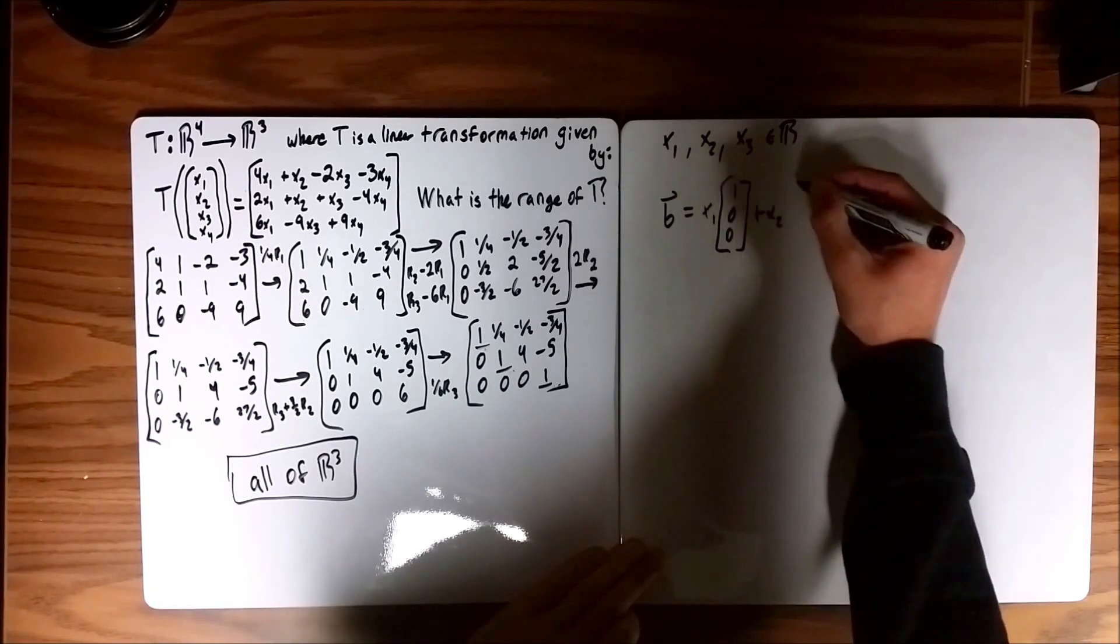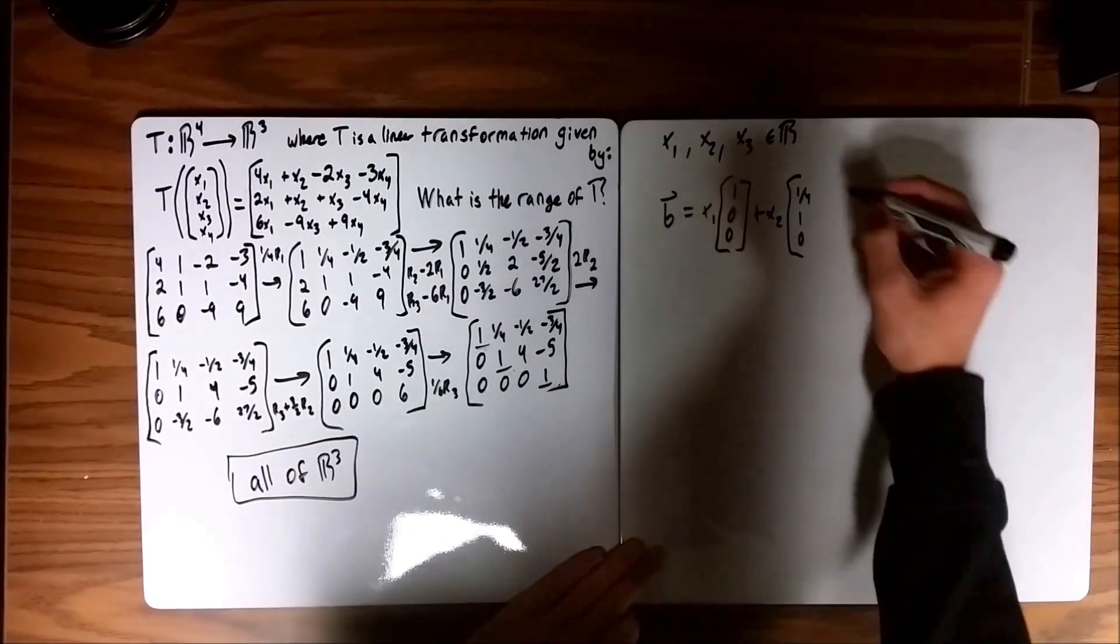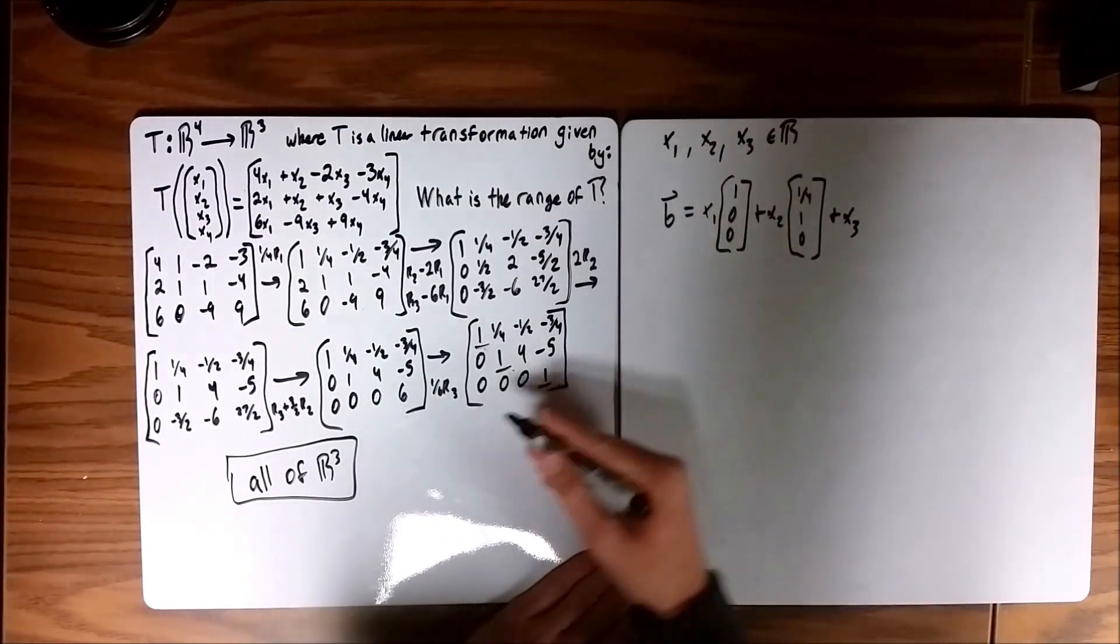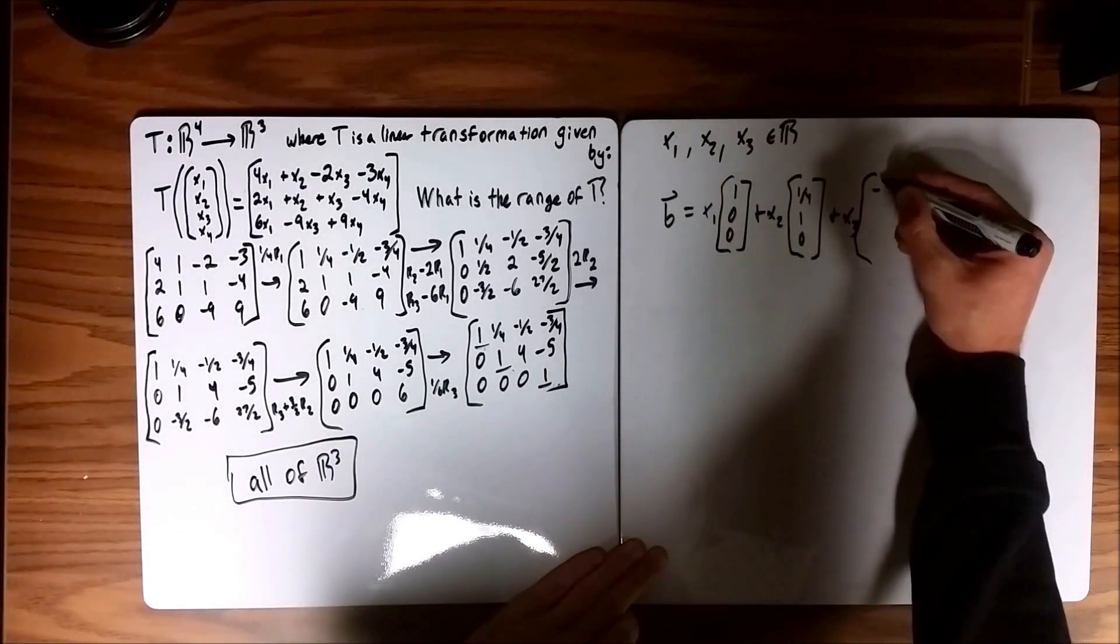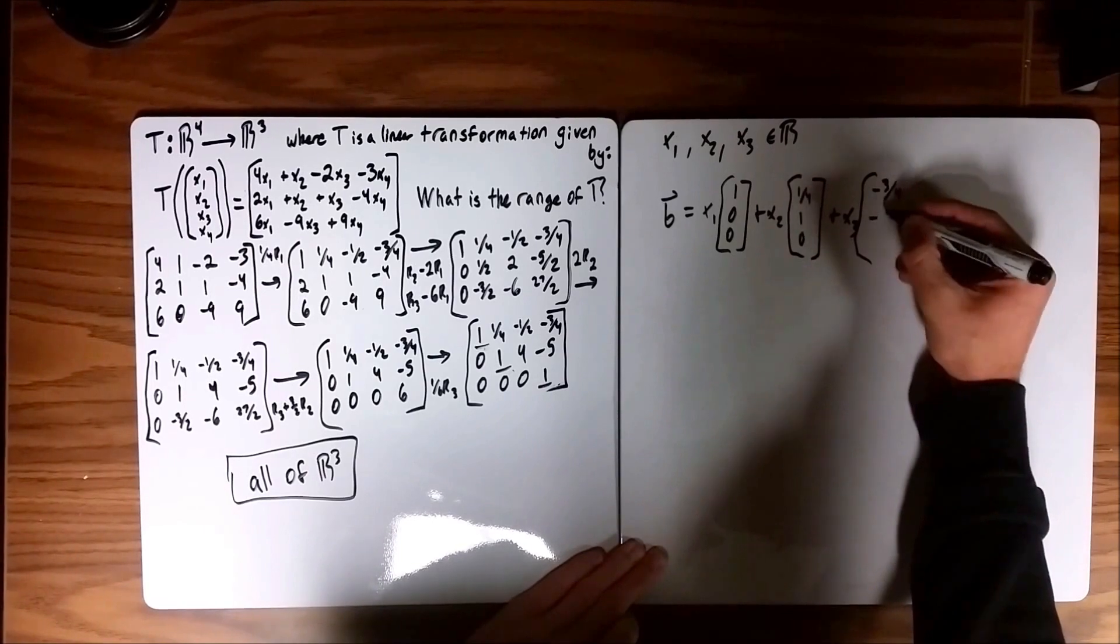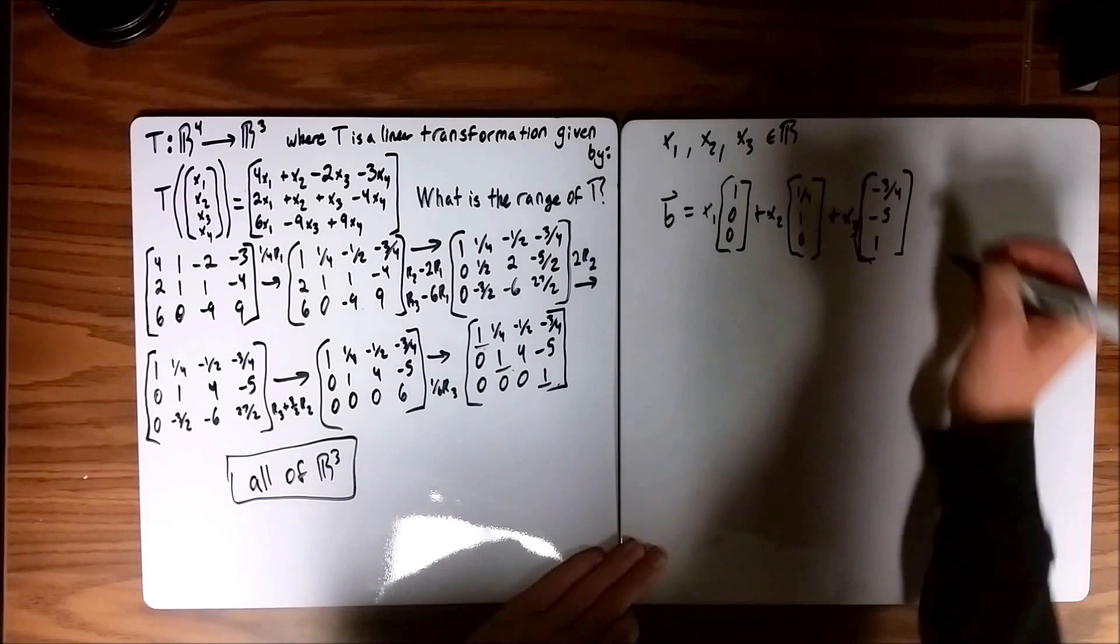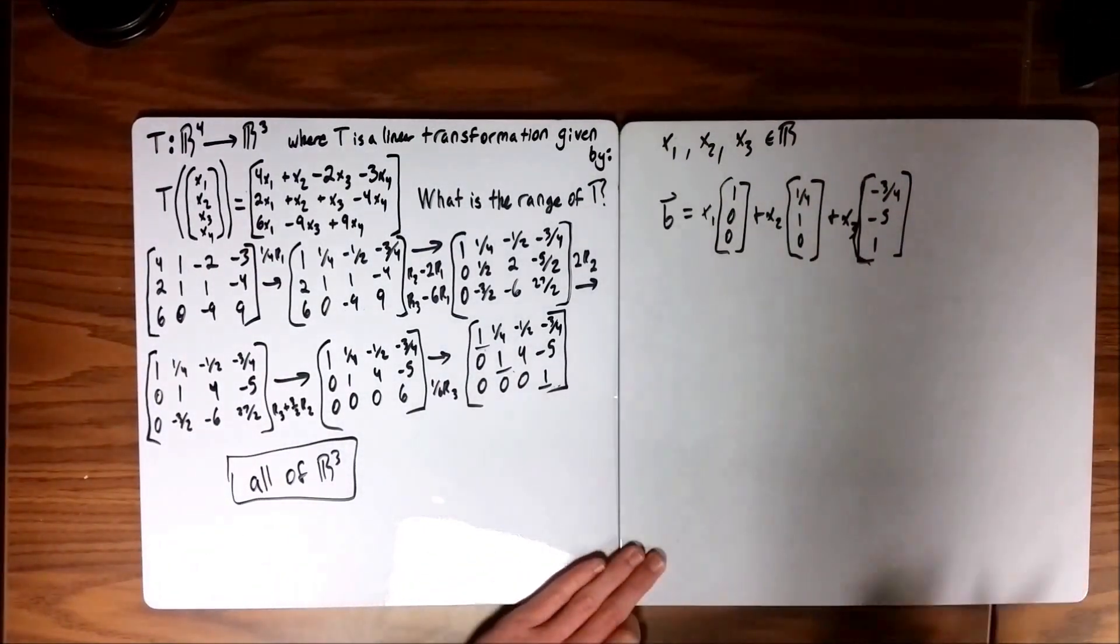Where you have some multiple of the vector 1, 0, 0, plus some multiple of the vector 1 fourth, 1, 0, where I am just pulling these pivotal columns and making them vectors because they are linearly independent because they are pivotal. And X3 times negative 3 over 4, negative 5, and 1. And that is the vector equation that represents the vector B.